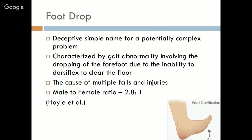Foot drop is a deceptively simple name for a pretty complex problem. It is characterized by a gait abnormality involving the dropping of the forefoot due to the inability to dorsiflex to clear the floor. This can be due to irritation of the common peroneal nerve or sciatic nerve, or paralysis of the muscles in the anterior portion of the lower leg. It causes multiple falls and injuries annually, with a male-to-female ratio of 2.8 to 1, and it equally affects both legs.